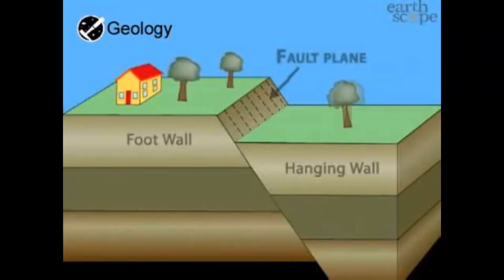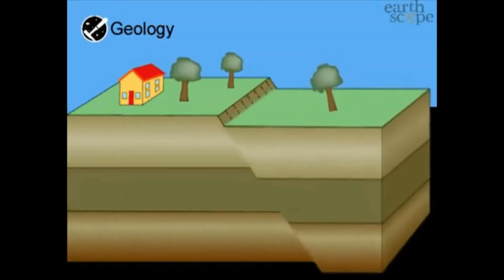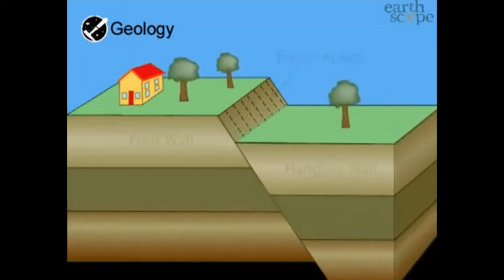The foot wall is the bottom part of the rock below the fault plane. The fault plane is the surface that separates the two moving pieces of rock. There are four major types of fault.